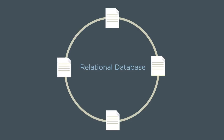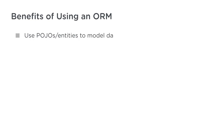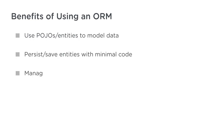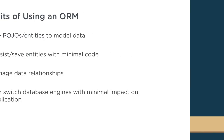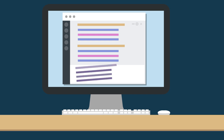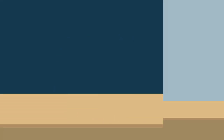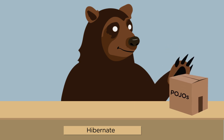In this course, we'll talk about an elegant solution that brings you back into the object-oriented realm with database connectivity. They're called ORMs, or Object Relational Mappers. The one we'll cover in this course is called Hibernate. By taking this course, you'll build a firm foundation in one of the most popular ORMs used in Java applications, Hibernate.